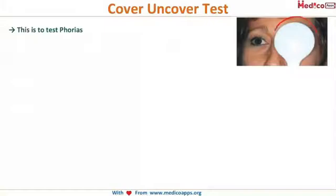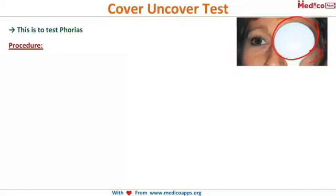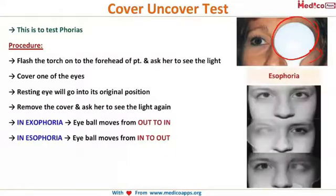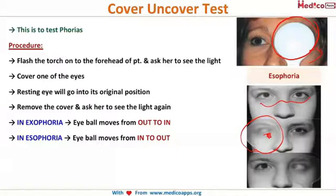The cover-uncover test is used for phorias. You cover the patient's suspected eye, flash the torch onto the forehead, and ask them to look at the light. The eye under cover will reveal its deviation. When you remove the cover, it comes back to center — that's the nature of phorias; they are hidden and covering one eye brings them out. In the primary gaze there is no deviation, but placing a translucent cover causes the eye to deviate inwards, revealing the latent squint.